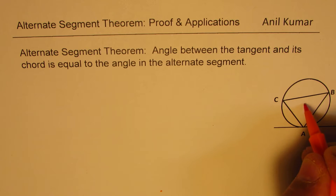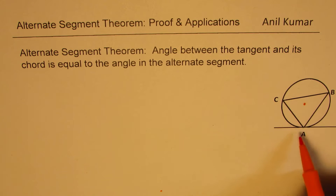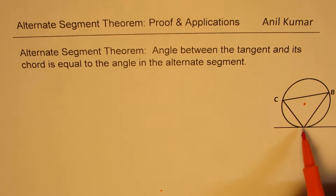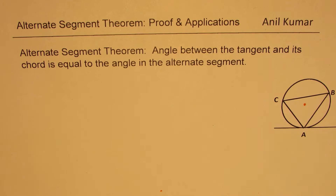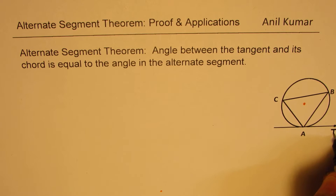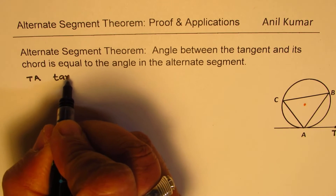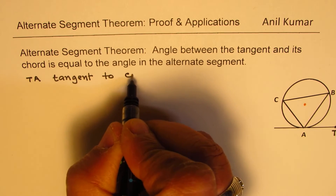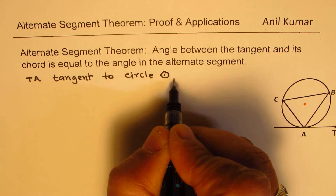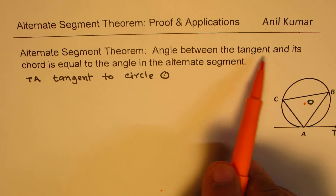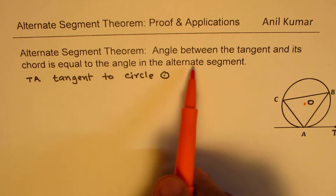Here is a circle with center O. We have a triangle in the circle. When we talk about alternate segment theorem, the sides of the triangle will not go through the center. Now here is a tangent — let's call this point T. So TA is tangent to circle O, and that is the center O for us.